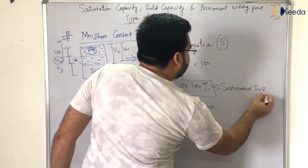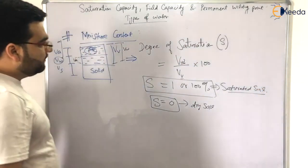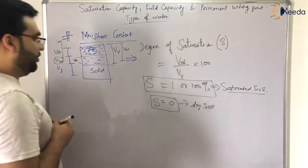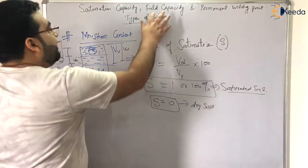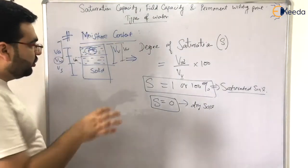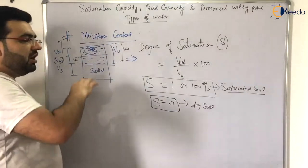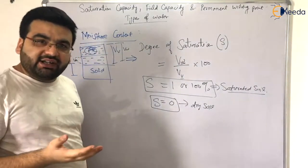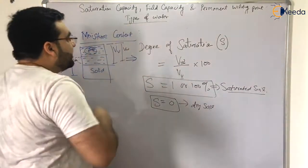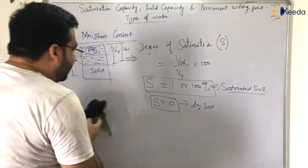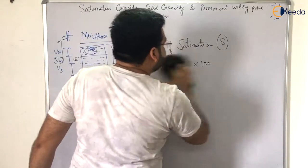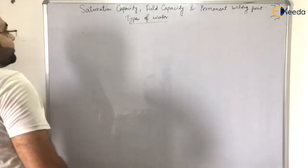We have understood saturation capacity — the maximum water that a soil can hold. Now let's understand field capacity.